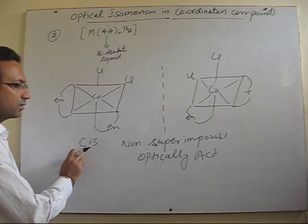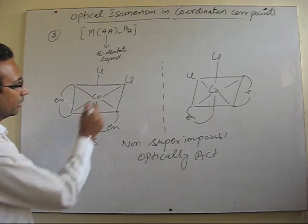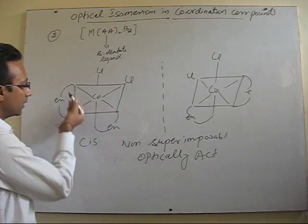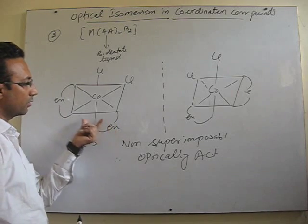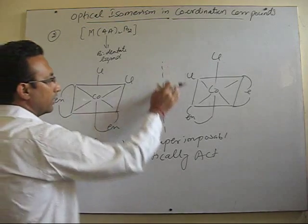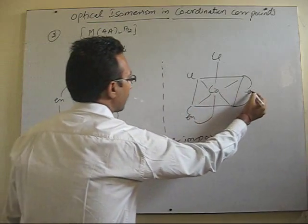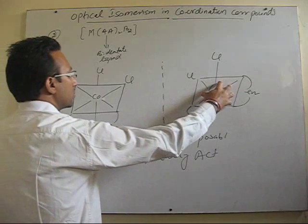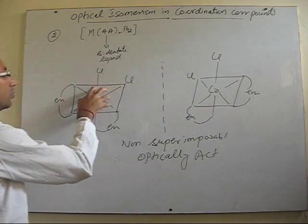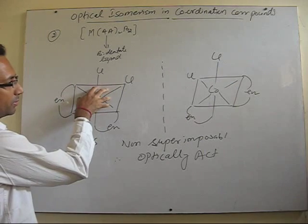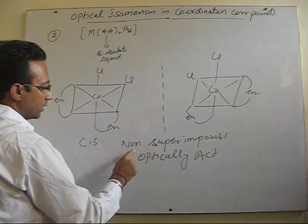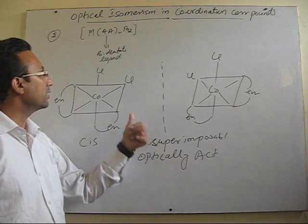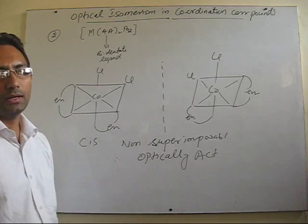I have drawn here its cis isomer. In its cis isomer, two chlorine are on the adjacent position, as well as all the nitrogen donors of ethylenediamine are on the adjacent positions. This is its mirror image. We can see that this mirror image does not superimpose on its object, so we can say these are non-superimposable mirror images, and therefore this particular isomer of the compound is optically active.